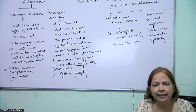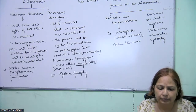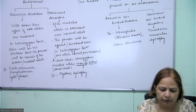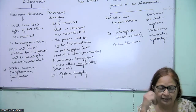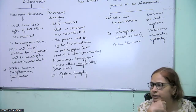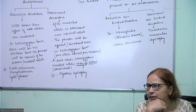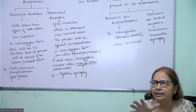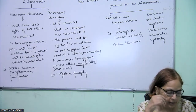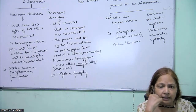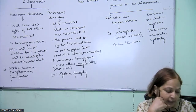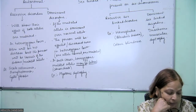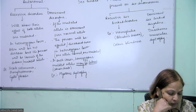Phenylpyruvic acid gets accumulated in the brain and starts affecting nervous tissue, causing mental retardation.